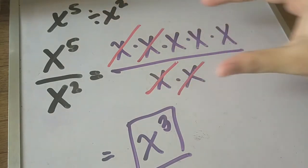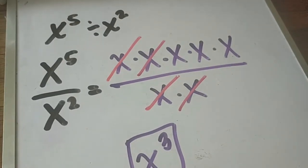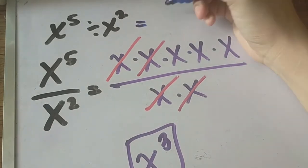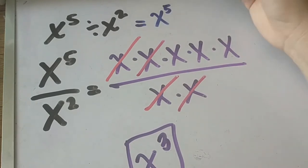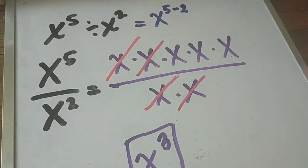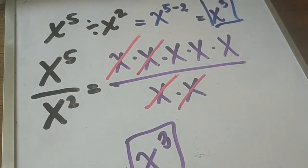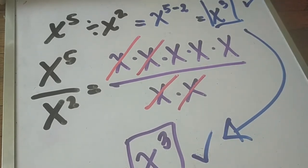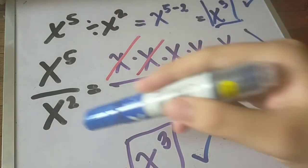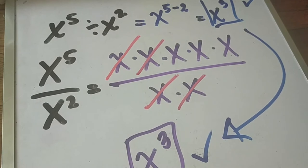Now if we follow the Laws of Exponents, we no longer need to do this expanded version or cancel out. Instead, for the quotient rule, we simply copy the base and subtract the exponent of the numerator minus the exponent of the denominator: 5 minus 2 gives us x raised to 3, which is the same answer. So the law of exponents is a shortcut so you don't need to expand anymore.